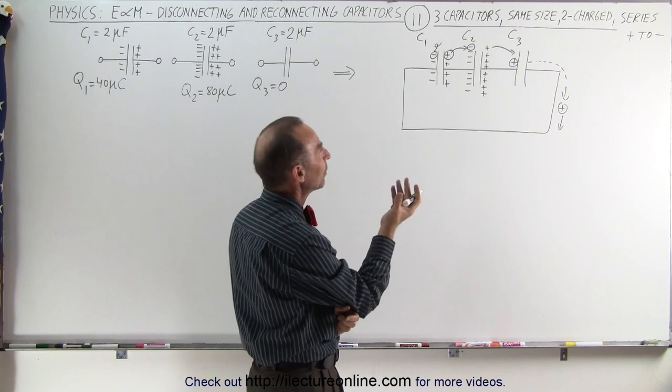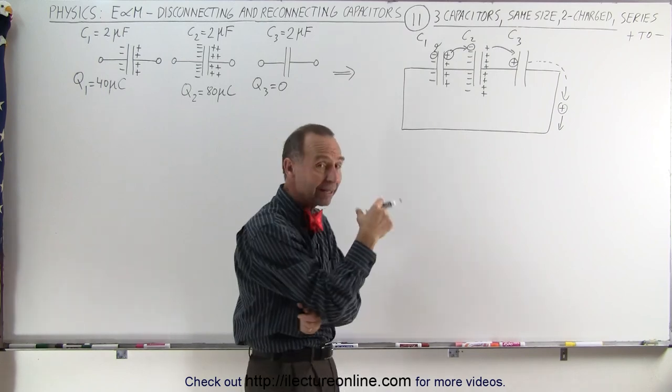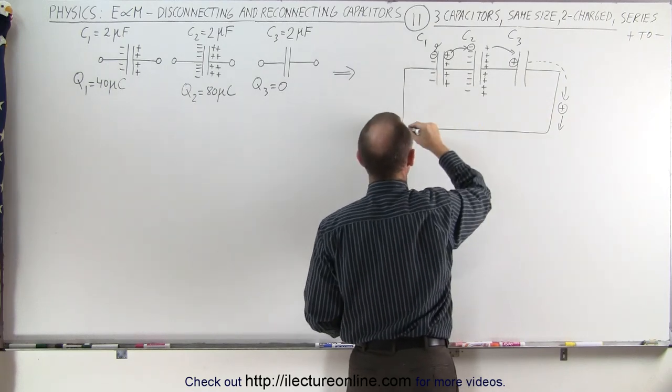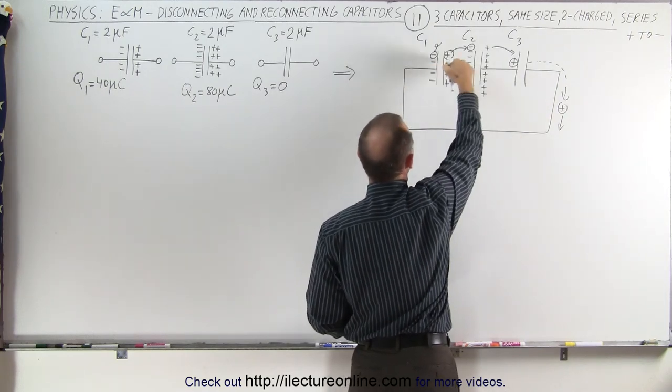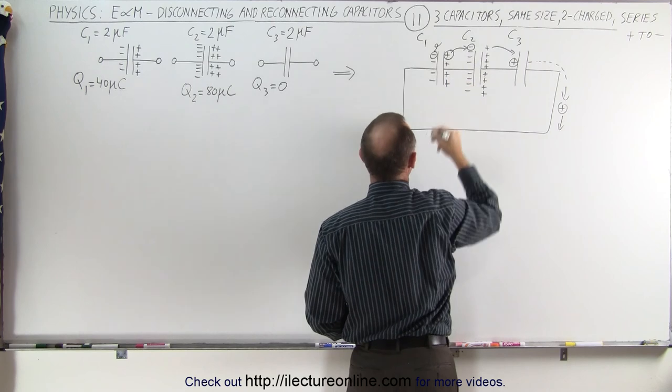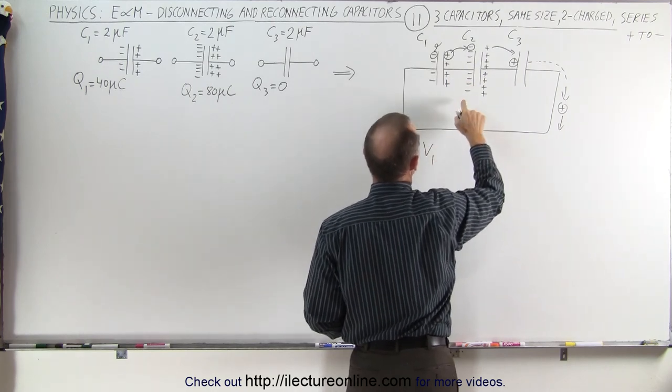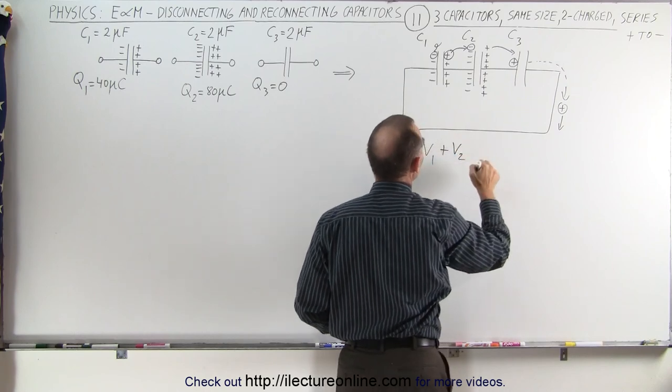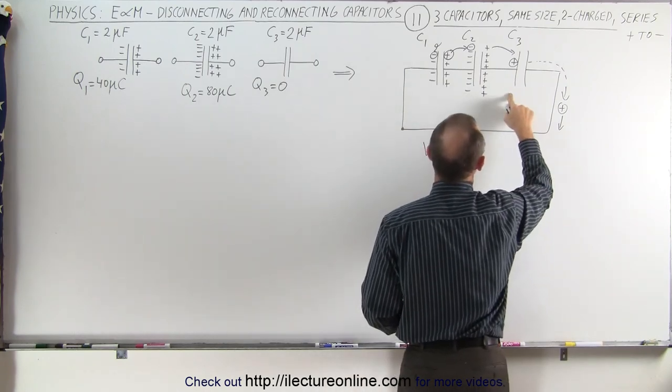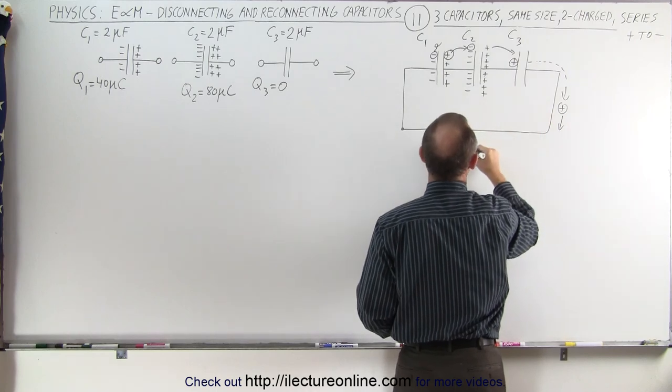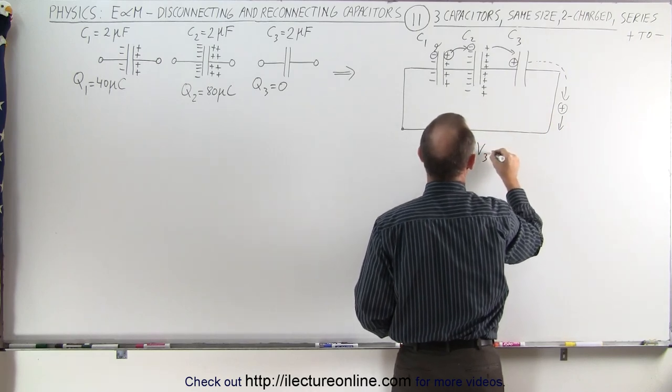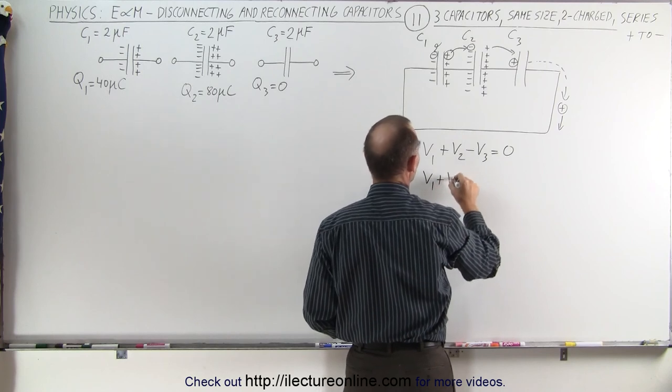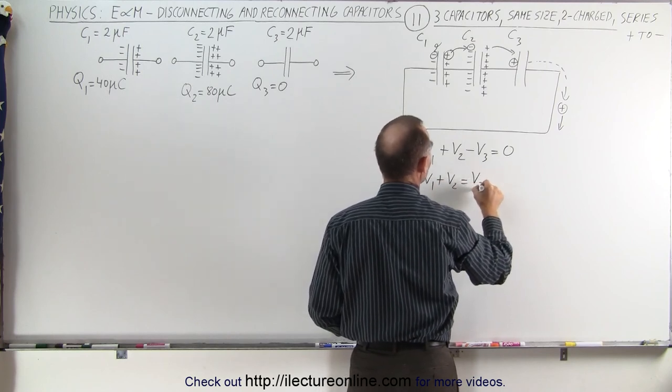So what will be the end result? In order to figure that out, we're going to have to add the voltages around the circuit. Starting over here, going across this first capacitor from negative to positive, that is V1, going across the second capacitor from negative to positive, that would be plus V2, and going across the third capacitor from positive to negative would be minus V3, and that adds up to zero, which means that V1 plus V2 equals V3.